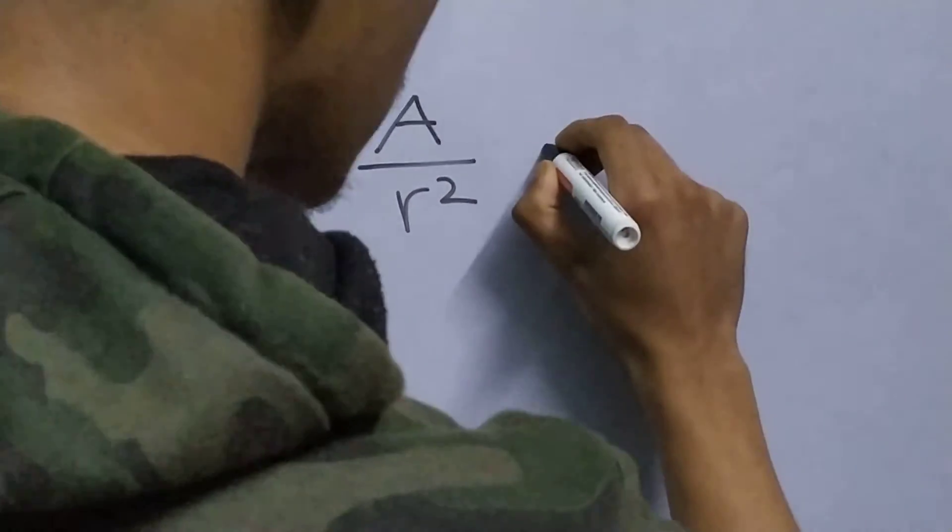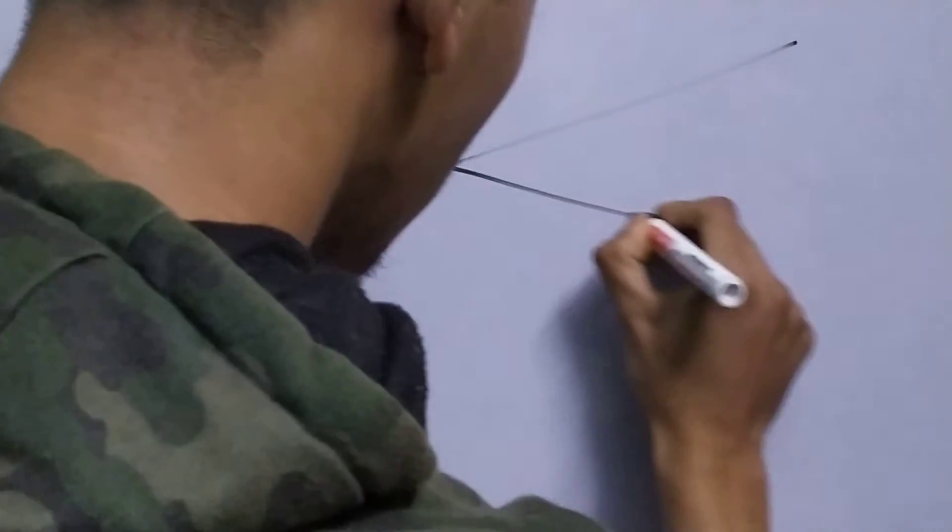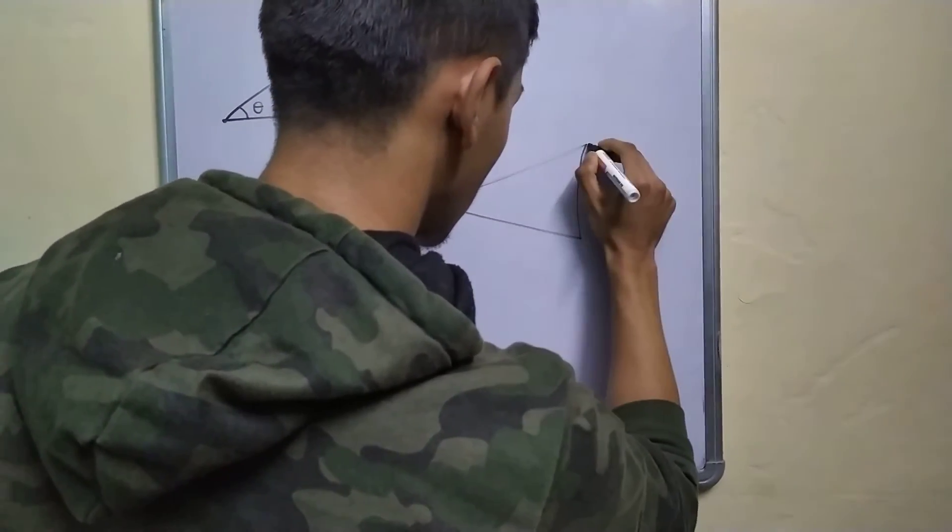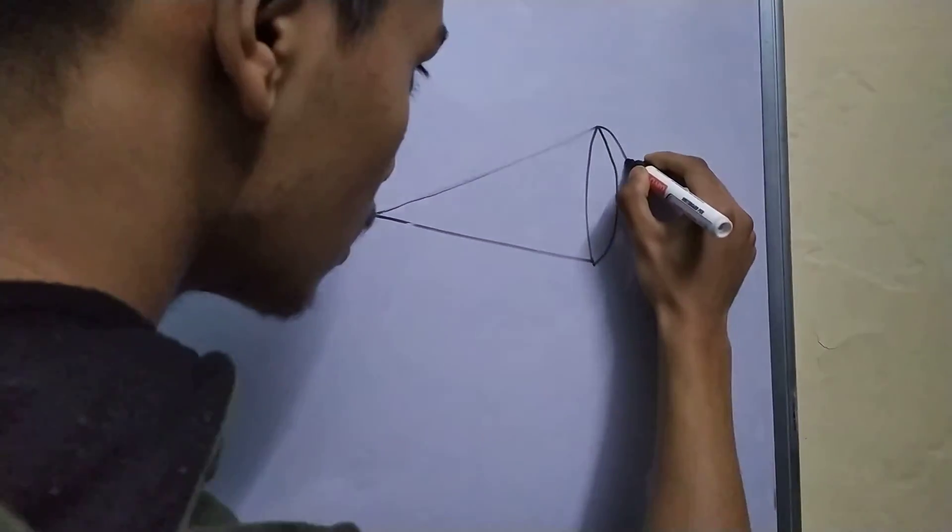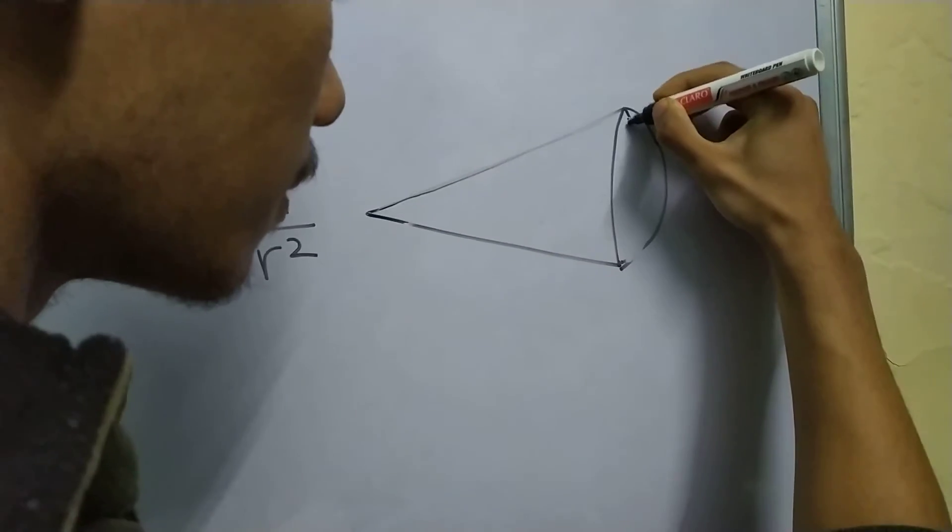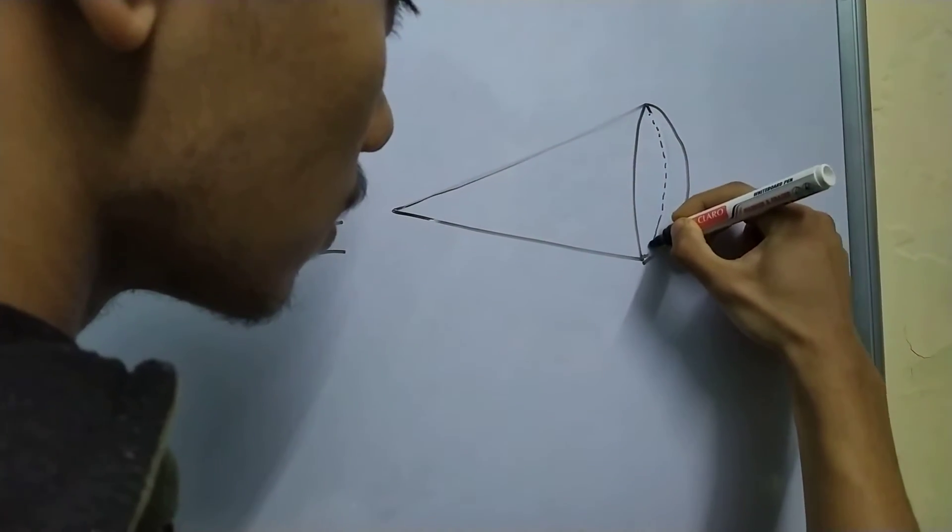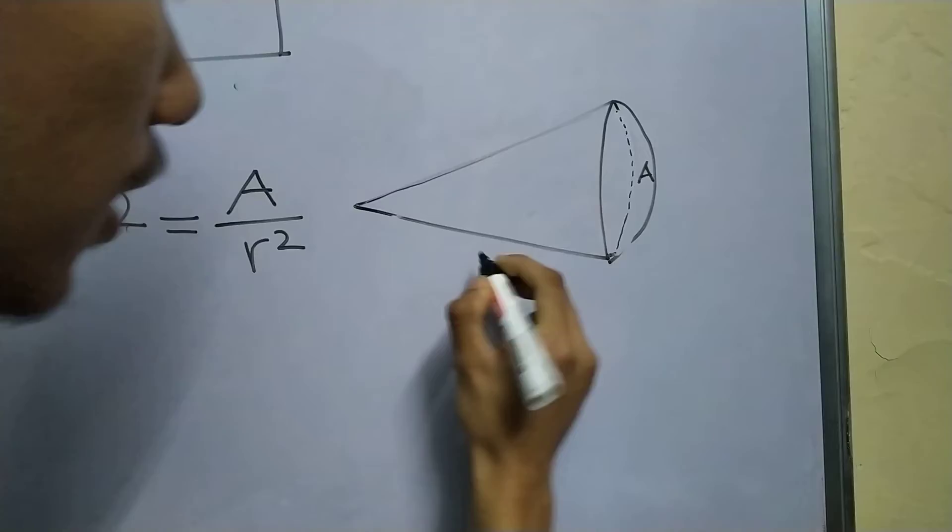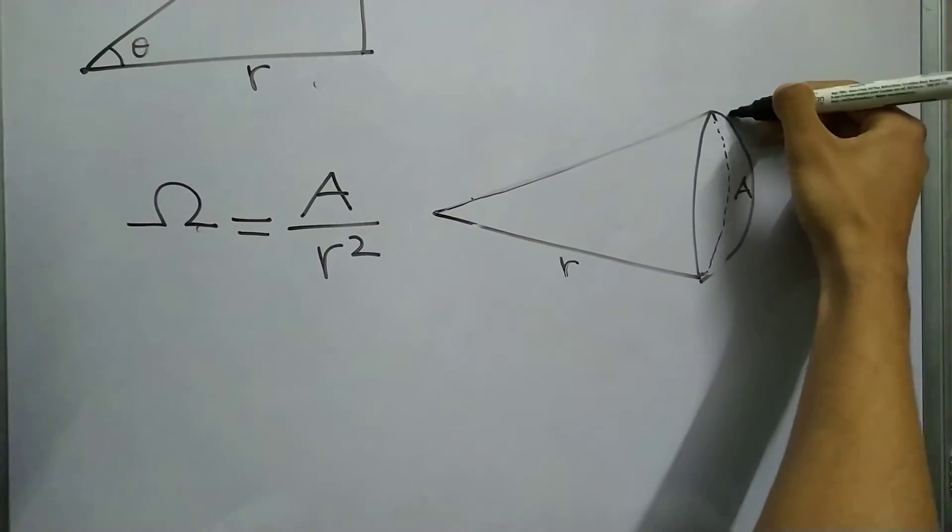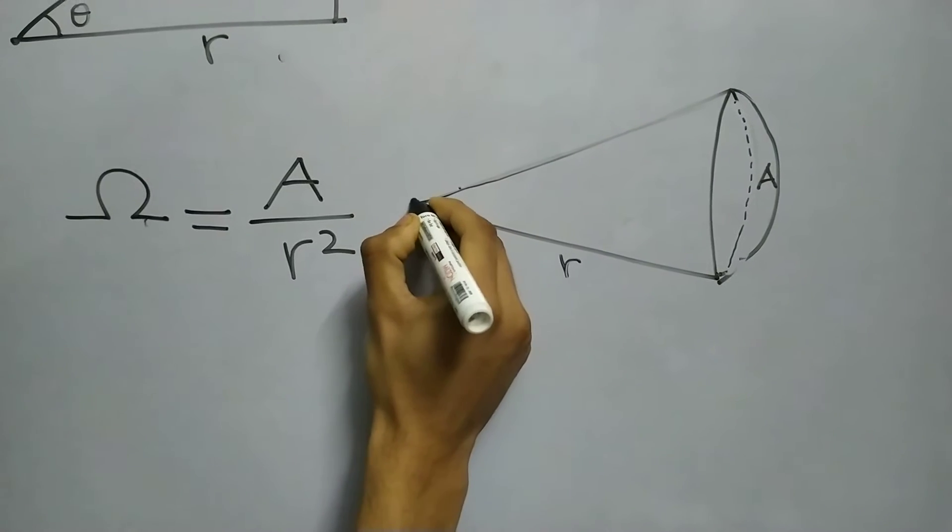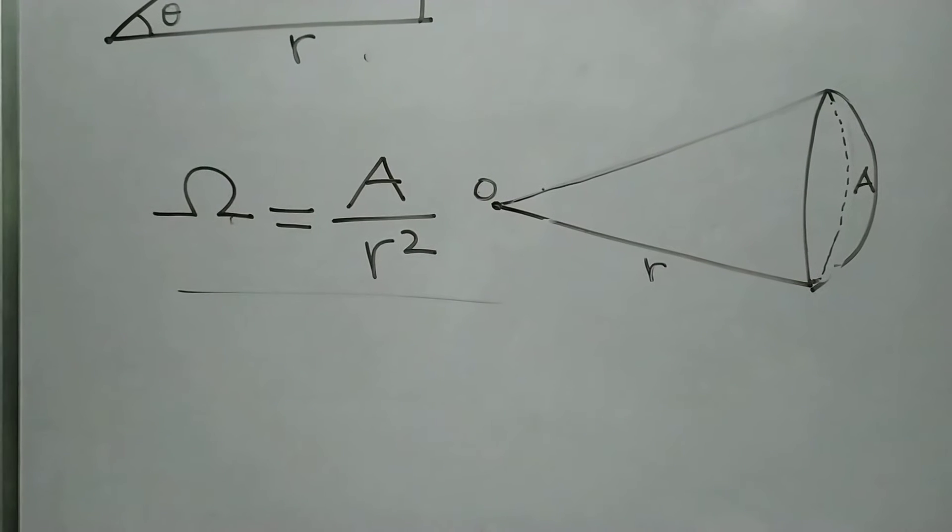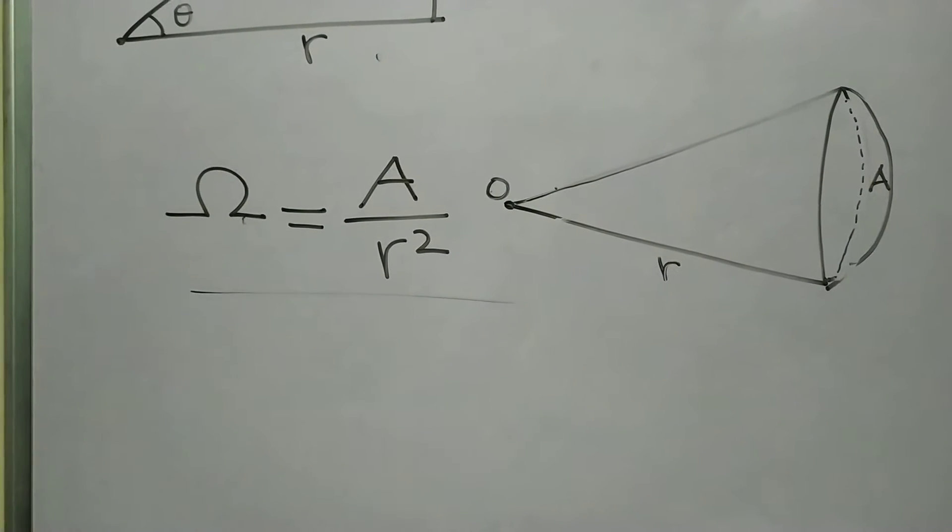Let me just drop it quickly. We have this cone. This is your area. This is your R. So, the solid angle subtended by this area at your vertex, let us call this O, is given by your area divided by R square.